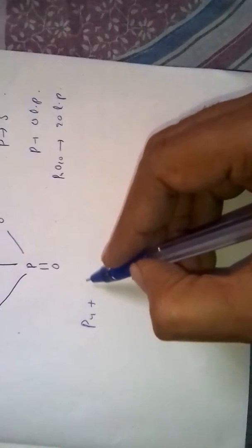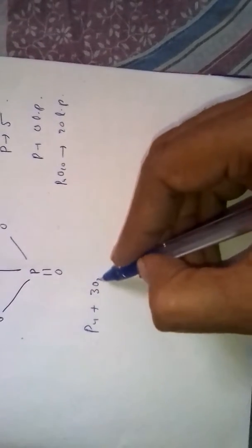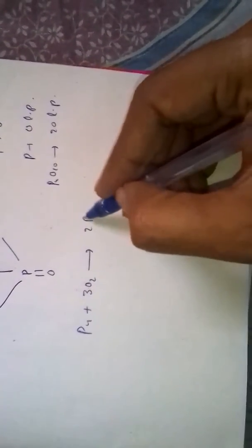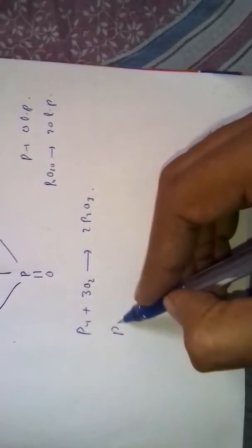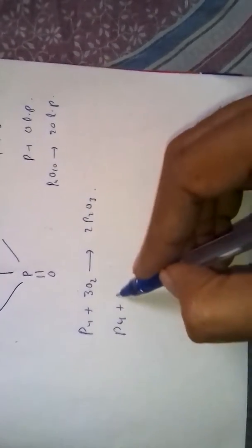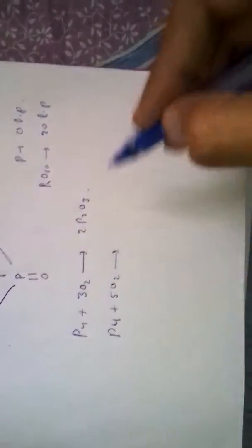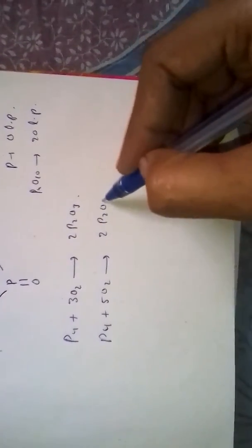Phosphorus when reacting with limited amount of oxygen (3O2) gives rise to 2P2O3. Phosphorus trioxide is formed. Phosphorus when reacting with excess oxygen (5O2) gives rise to 2P2O5. Phosphorus pentoxide is formed.